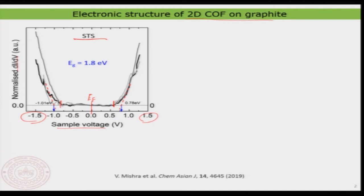I see clearly this onset, and there is a clear increase in density of states. By calculating a mean value of the onsets, I get a band gap of about 1.8 electron volts. This is quite nice — whatever COF we prepared on the graphite is a semiconducting material with a clear gap around the Fermi level. This is significant because our intention was to generate a graphene-equivalent material that has a band gap, which is important for electronic applications.